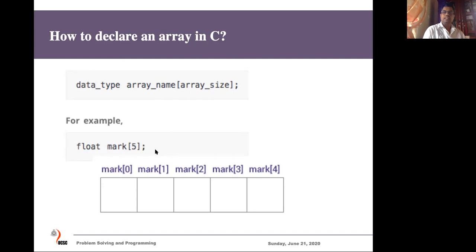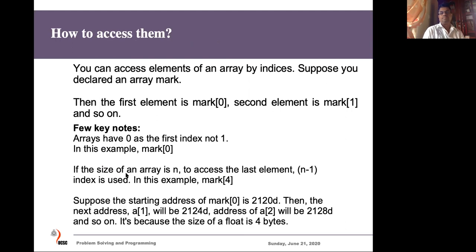When you create such an array, the computer will reserve five slots in memory to keep five floating-point numbers. We can access those slots with indexes starting from zero. The first slot is index zero, the second is one, the third is two, and so on — the last element of a five-element array is index four, not five. If there are n elements in the array, the last element is n minus one.